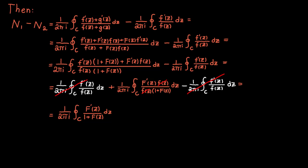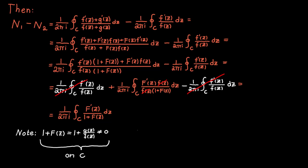We can show the integral is zero by showing that the integrand, capital F prime divided by 1 plus capital F, is analytic on the curve c — which by Cauchy's integral theorem would imply the whole integral equals zero. Now, 1 plus capital F equals 1 plus g over f, and this cannot be zero on c, because that would require g over f to equal minus 1, implying the absolute value of g equals the absolute value of f. But the absolute value of g must always be strictly smaller than the absolute value of f, so capital F prime divided by 1 plus capital F is analytic on c.